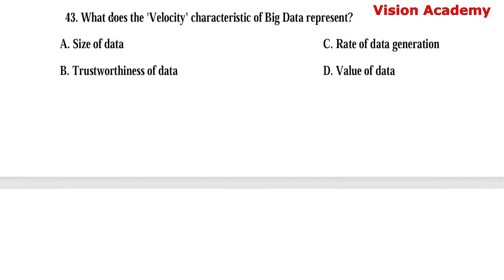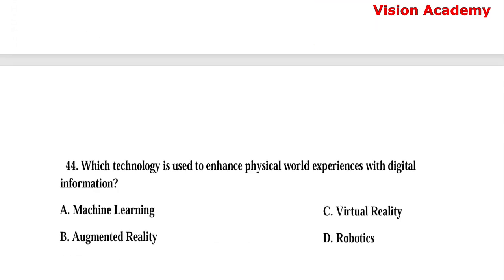Question number 43. What does the velocity characteristic of big data represent? Option A: Size of data. Option B: Trustworthiness of data. Option C: Rate of data generation. Option D: Value of data. Here, option C, rate of data generation, is the right answer.